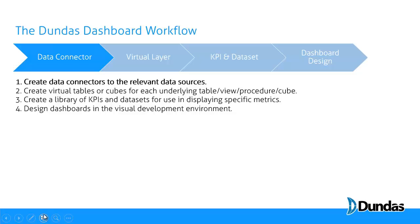Dundas inherits the logical schema. So in the case of relational sources, it'll pull out the tables, views, functions, and stored procedures that exist. For SSAS, it'll pull out the OLAP cubes. For flat files, such as Excel, Dundas will impose a tabular data structure on top of it.